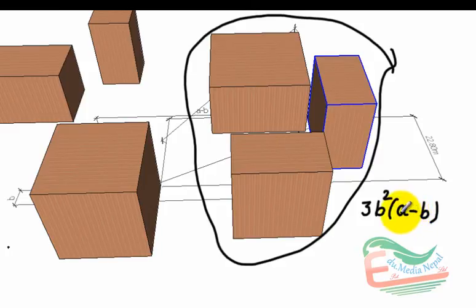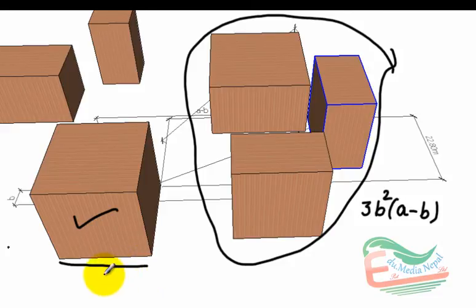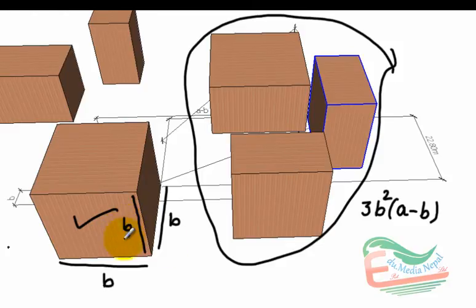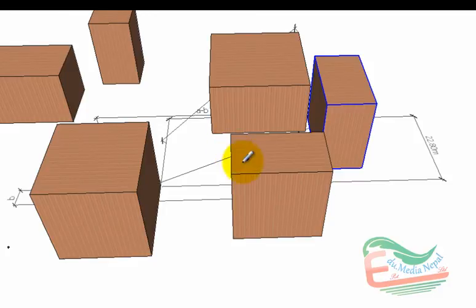Now, one more block is remaining, which is a cube having length b, breadth b, and height also b. So its volume is b cube.